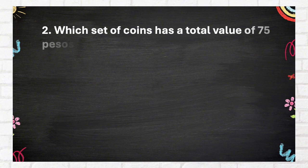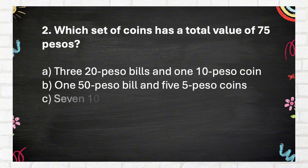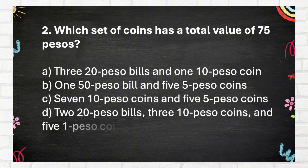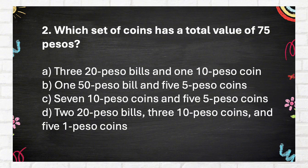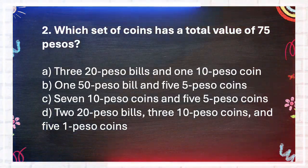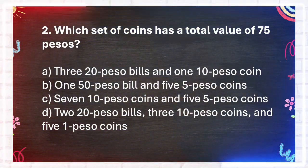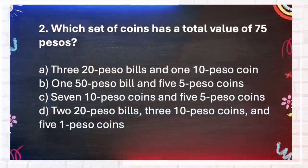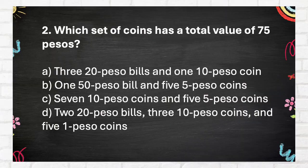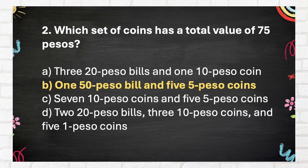Question number 2. Which set of coins has a total value of 75 pesos? Again, which set of coins has a total value of 75 pesos? A. 3 twenty-peso bills and 1 ten-peso coin. B. 1 fifty-peso bill and 5 five-peso coins. C. 7 ten-peso coins and 5 five-peso coins. D. 2 twenty-peso bills and 5 five-peso coins. The answer is B: 1 fifty-peso bill and 5 five-peso coins.